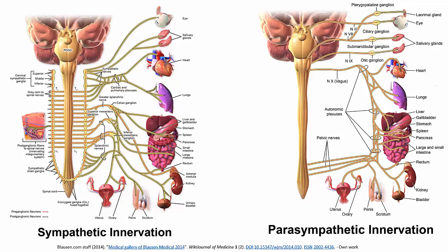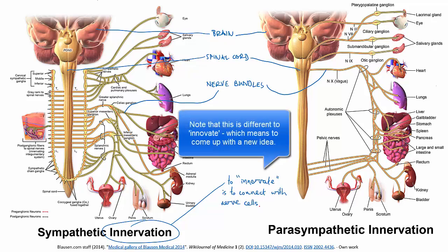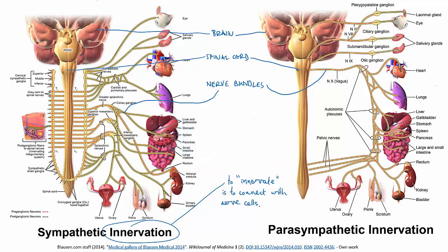These diagrams are a simplified map of how the sympathetic and parasympathetic nervous systems connect to other organ systems. Notice that things aren't to scale. The yellow paths represent nerve bundles that innervate the organ systems — to innervate means to connect with nerve cells. You don't need to know all of these connections, but the idea is to appreciate how very interconnected all the systems of your body are.